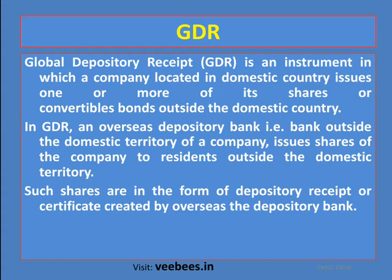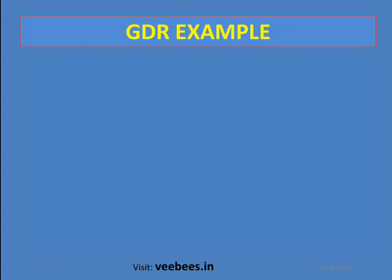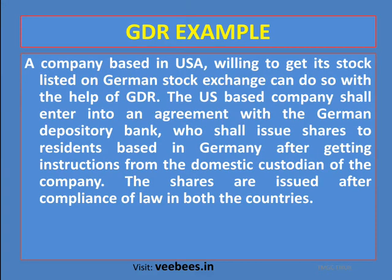For example, a company based in the USA that is willing to get its stock listed in the German stock exchange can do so with the help of GDR. The US-based company shall enter into an agreement with the German depository bank, which shall issue shares to residents of Germany after getting instruction from the domestic custodian.